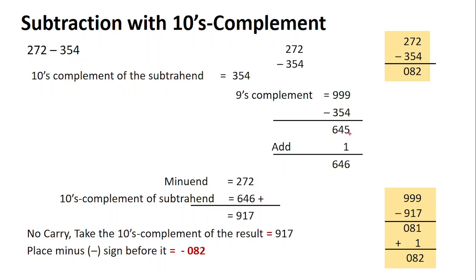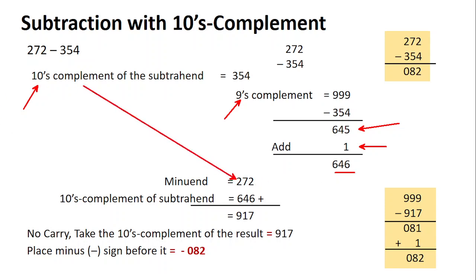To find the tens complement, count the digits: one two three. Write three nines, then write the given subtrahend and subtract. Nine minus four is five, nine minus five is four, nine minus three is six — this is the nines complement. To find the tens complement, add one: 645 plus one is 646. This is your tens complement.